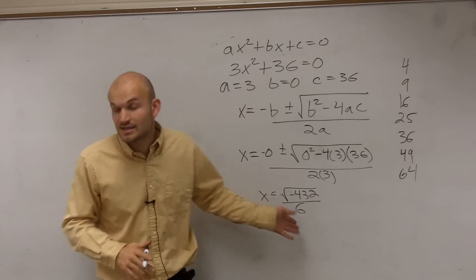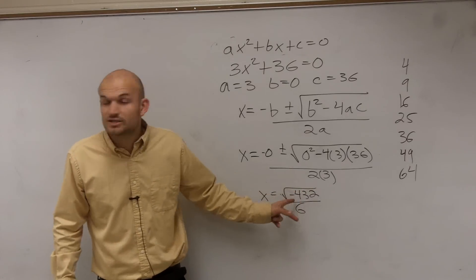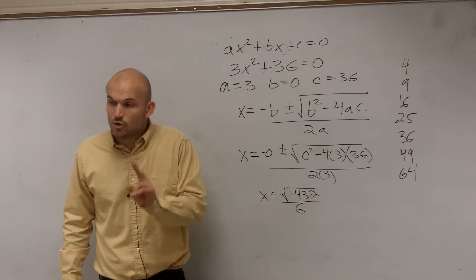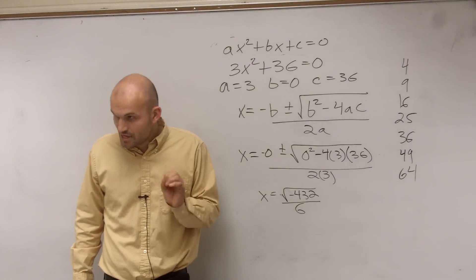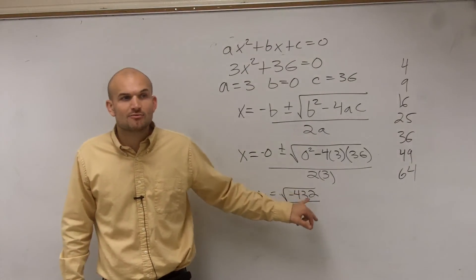Well, since our discriminant is negative, we know we're going to have two complex roots. You're right. So we're going to have two complex roots, but we might still be able to simplify this.